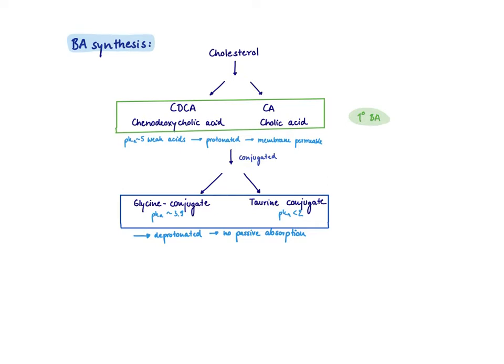These primary bile acids are very weak acids, so they are mainly in their protonated form. They are non-charged and therefore membrane permeable, meaning they can be passively reabsorbed everywhere. But where do we want to have our bile acids? We want them in the duodenum to help digest and absorb fats.